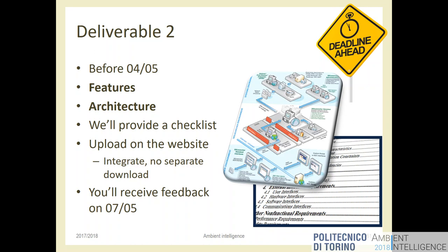By the beginning of May, you should have everything you need to know about your project: all features listed, all components listed, and ideally we'll also know which components you need that aren't in the lab so we can procure them. April is devoted to thinking about features and architecture. By the end of April you have clear ideas, write them on the website, and during May and June you implement the project.